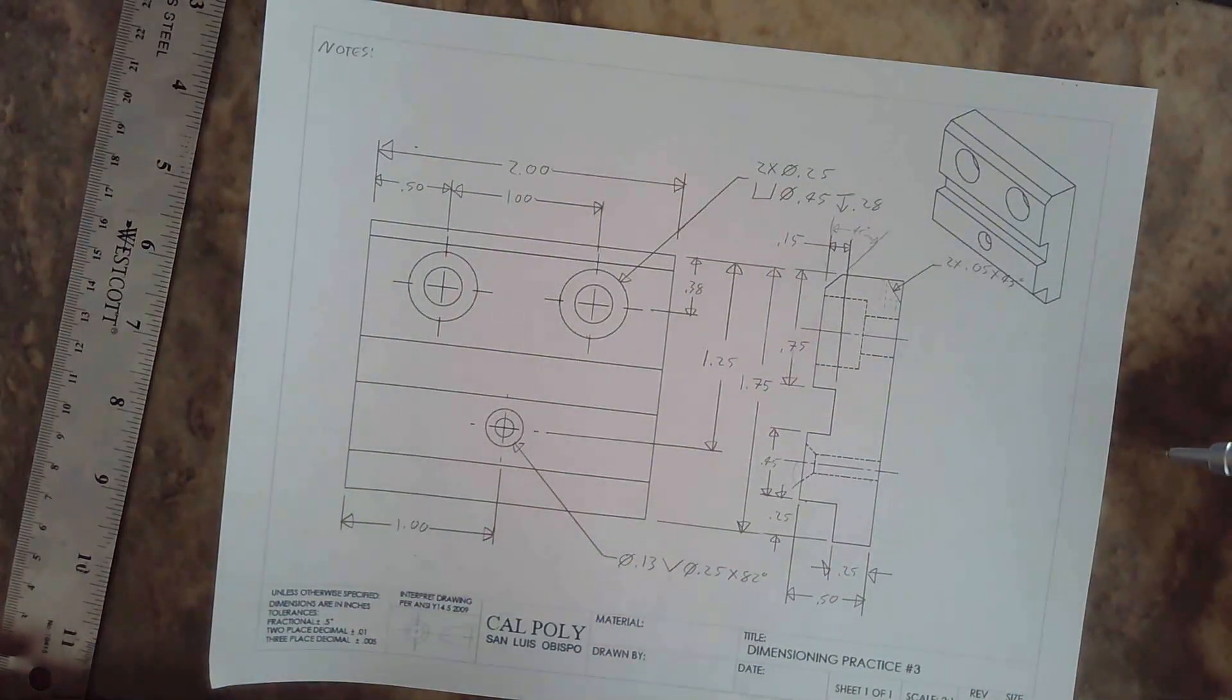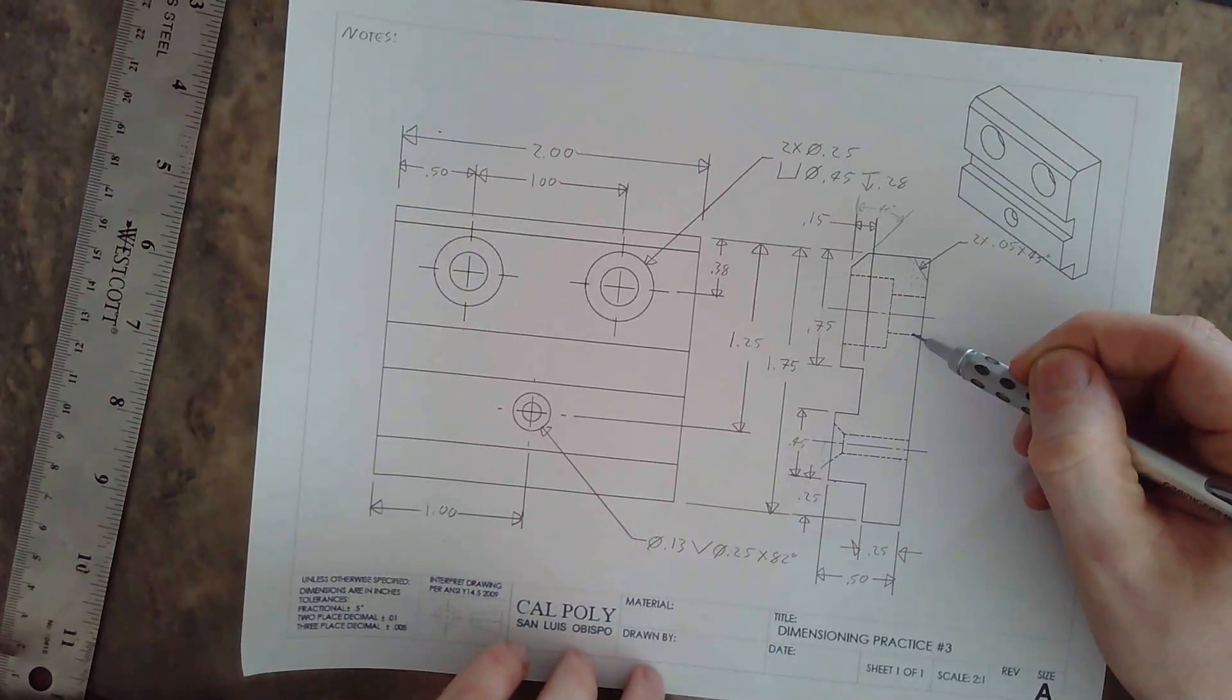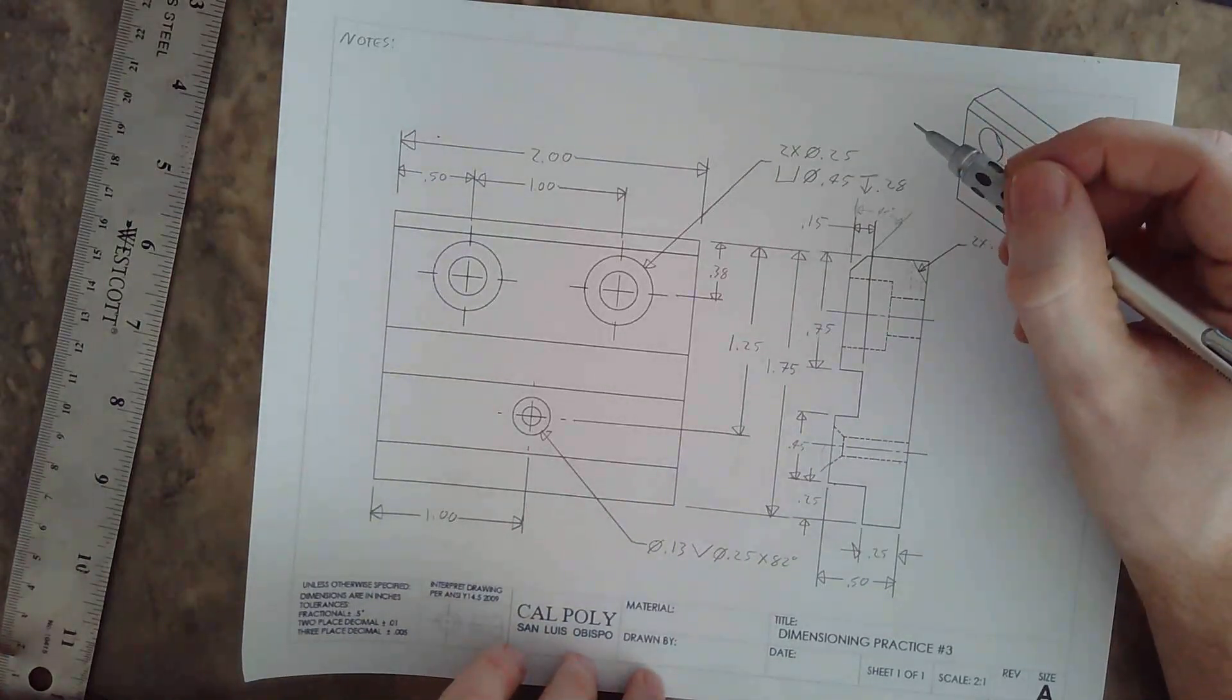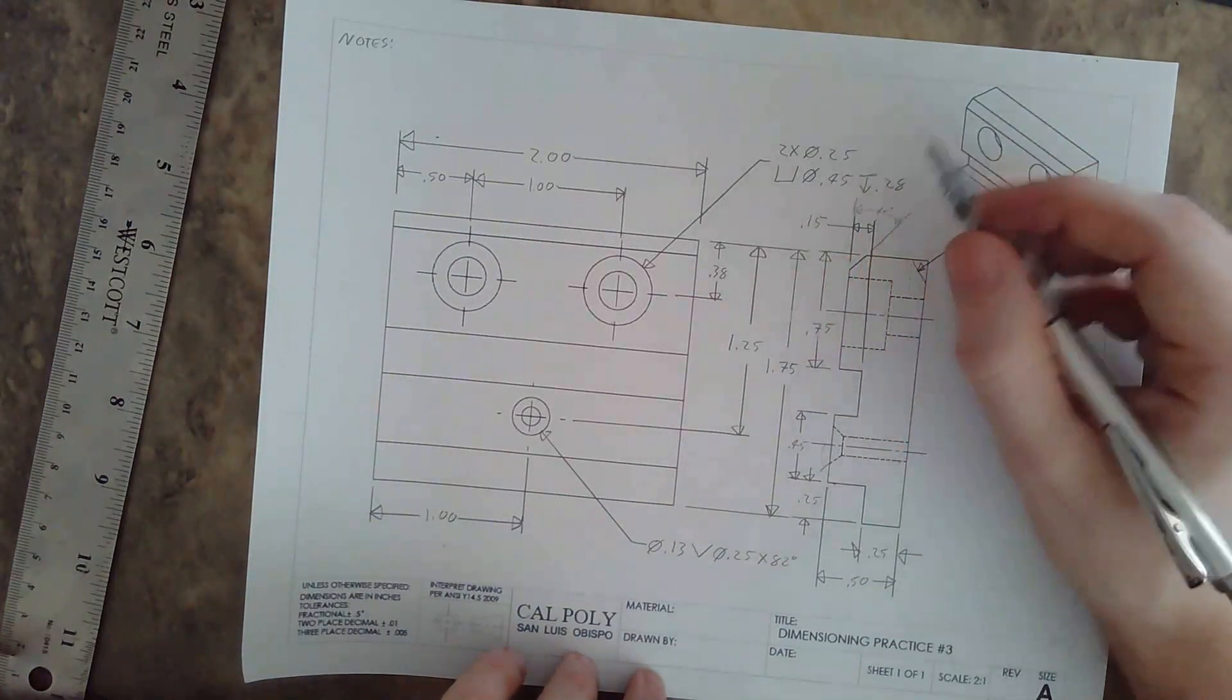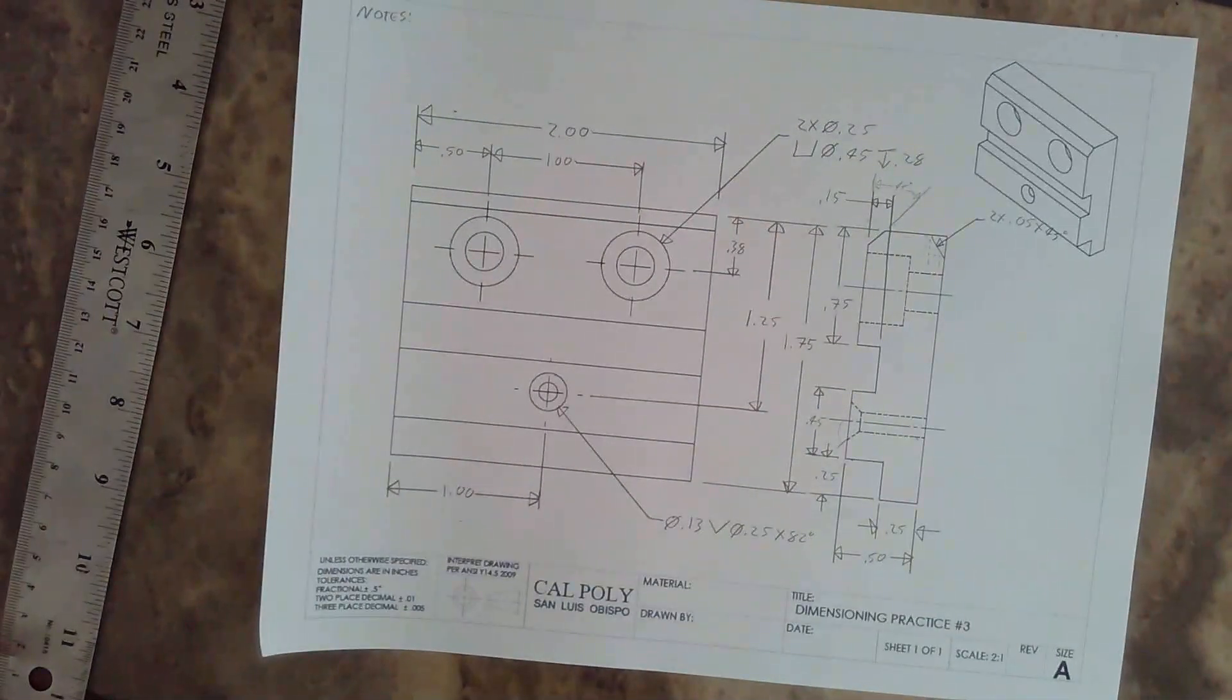If you have a hole that did not go all the way through the part here, it would be a normal hole callout like that, and then you'd have a depth symbol and the depth of that hole there.